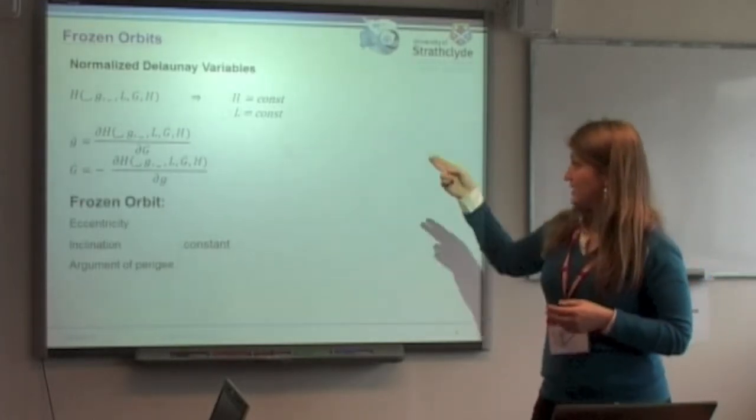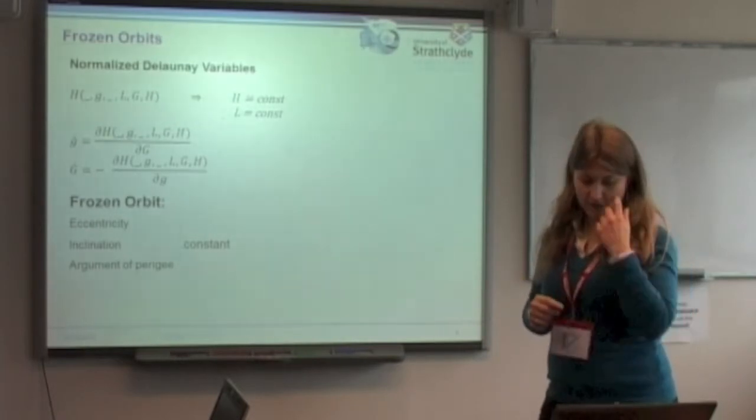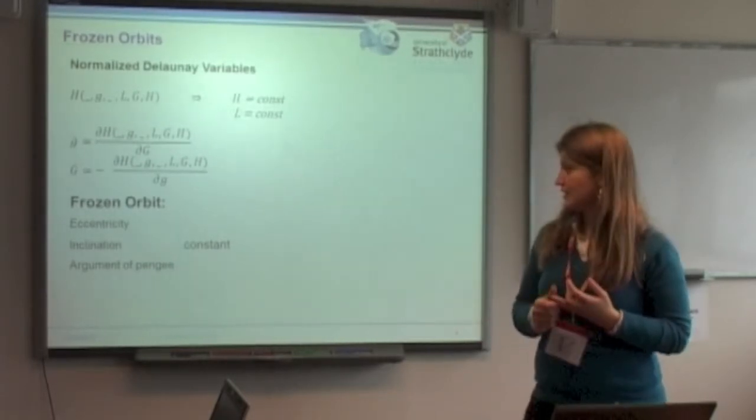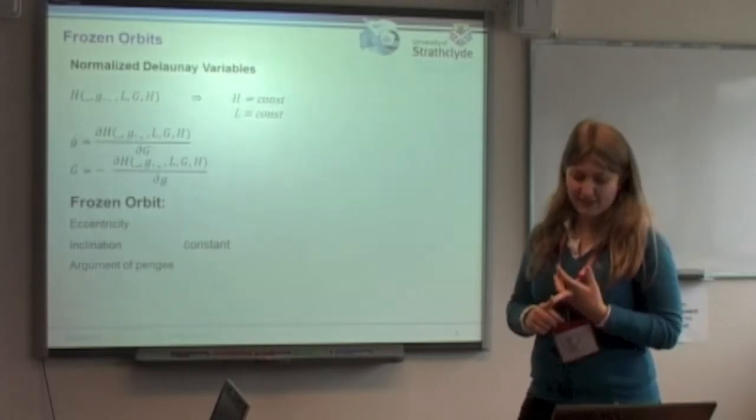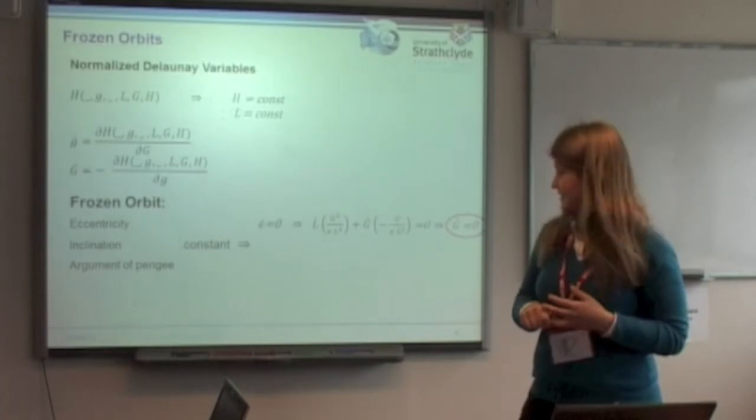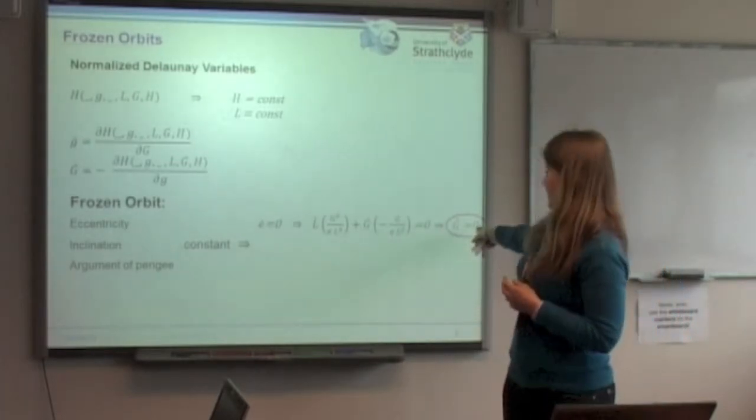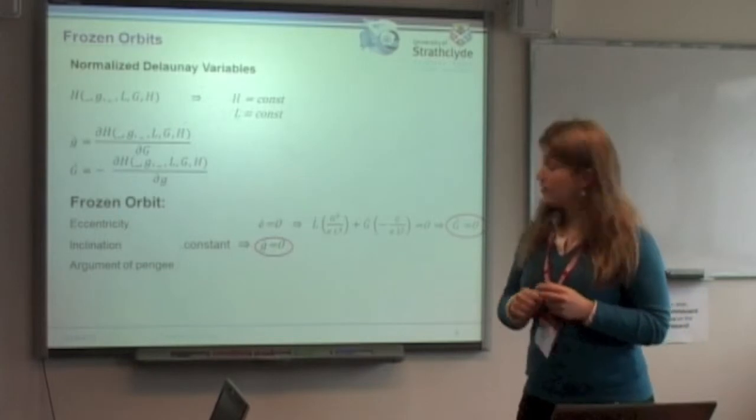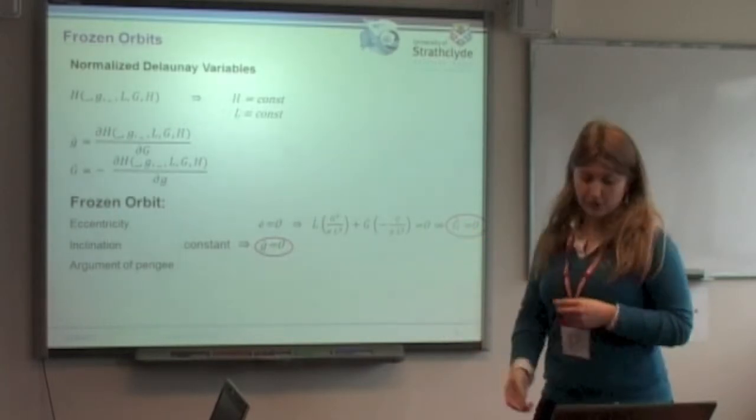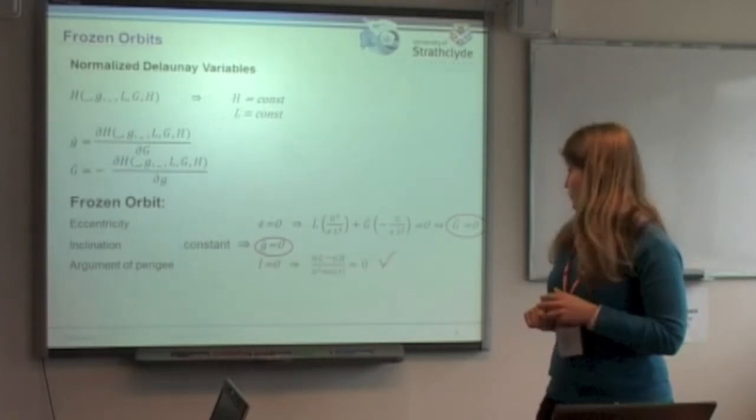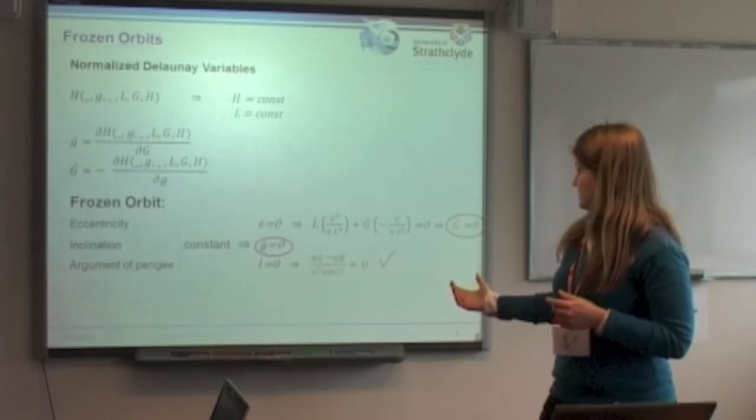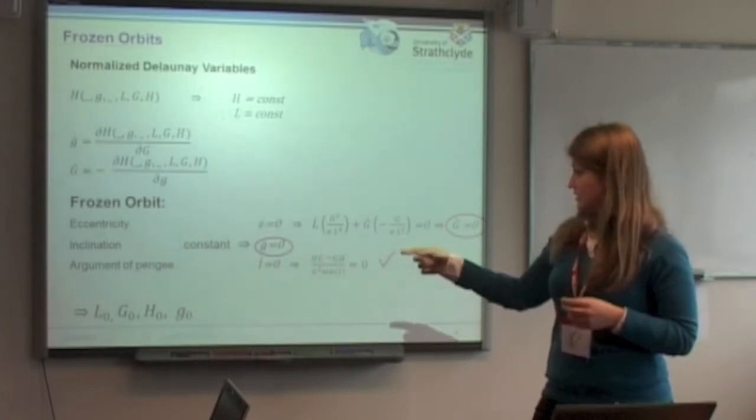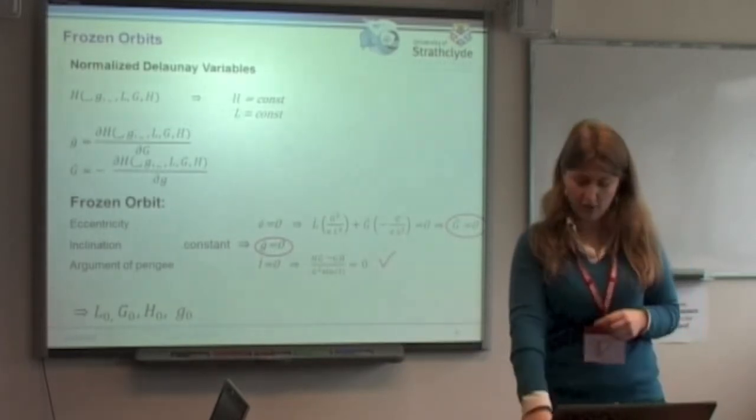What we are going to do with this system that we found, we are going to get some frozen orbits that by definition are those orbits which have eccentricity, inclination, and argument of pericenter constant. So we will set the eccentricity to be zero, which by definition will bring us to set the second of the motions equal to zero, the argument of pericenter constant, so the first equation equal to zero. And then we will have the inclination automatically equal to zero. So solving these two equations will bring us to four initial conditions of our orbits.